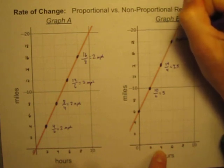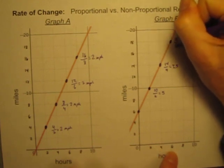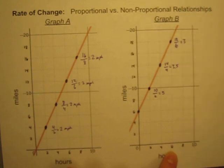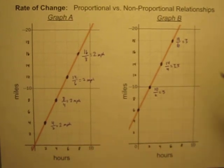Or right there, eighteen miles in six hours is three miles per hour. So I'm getting different rates as I'm looking at those different points.